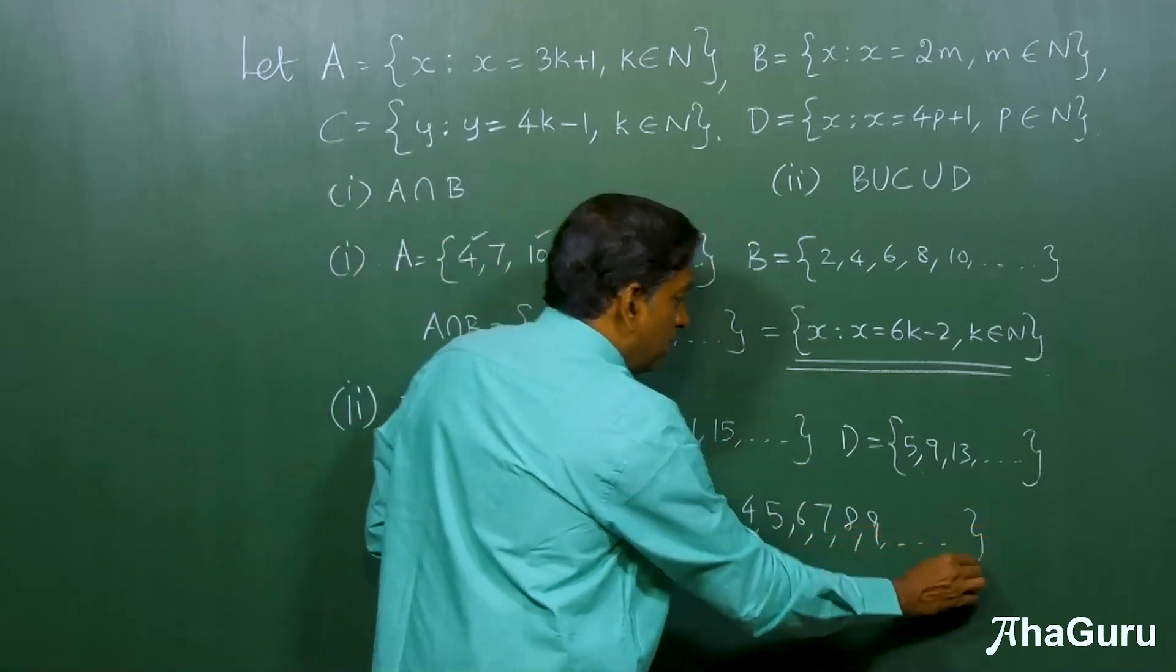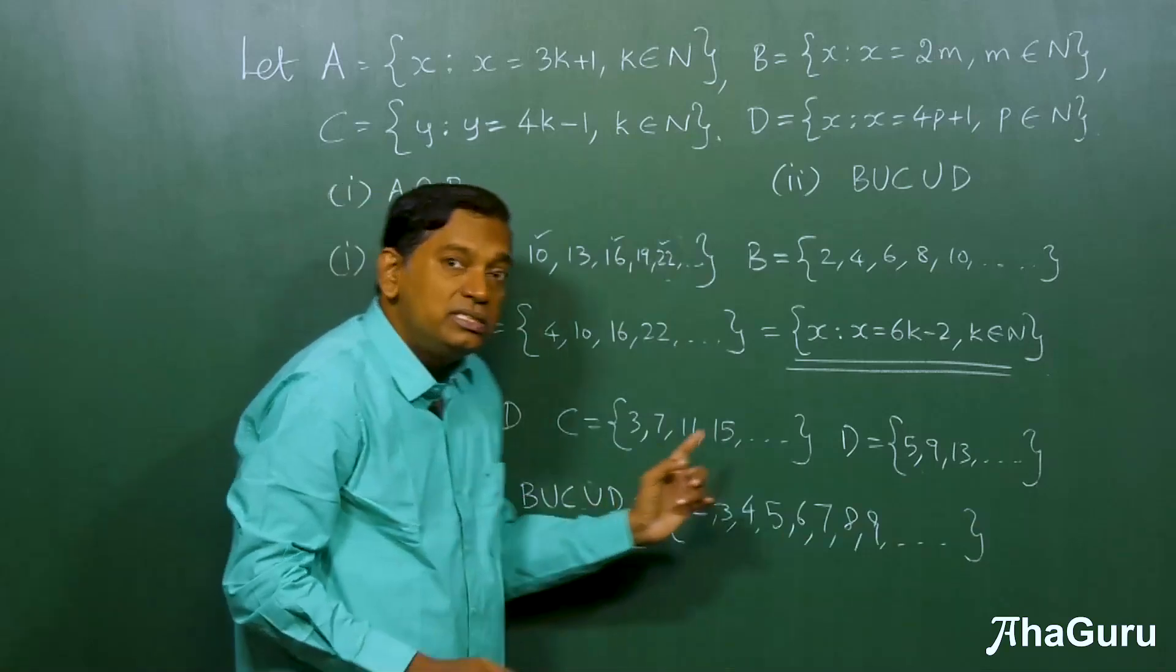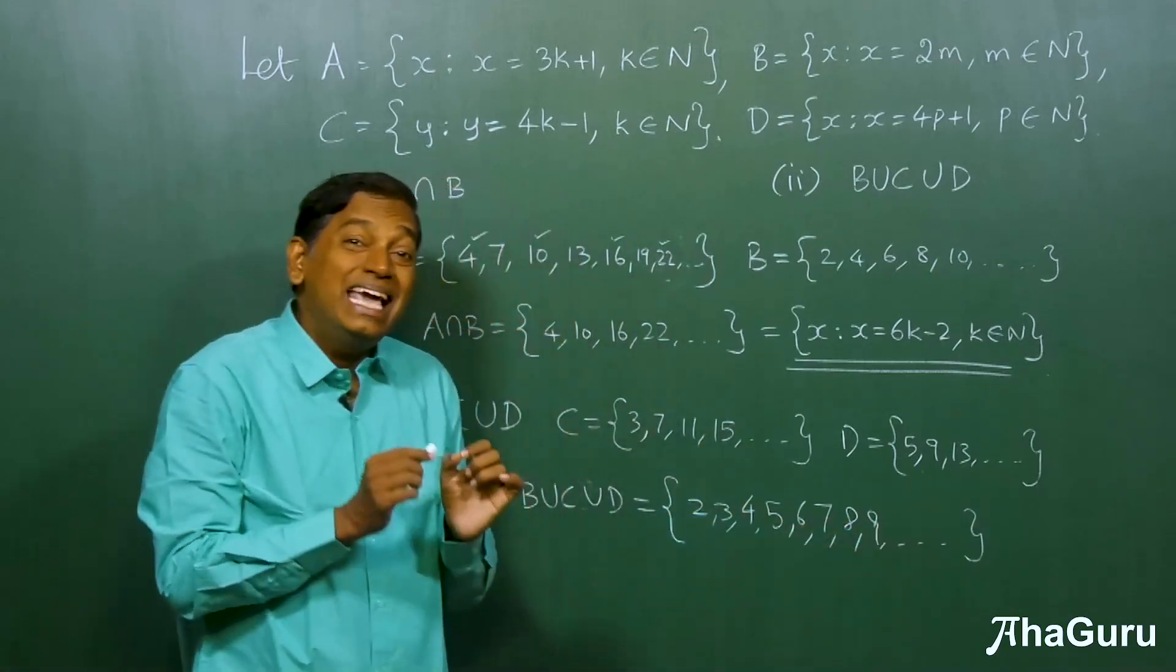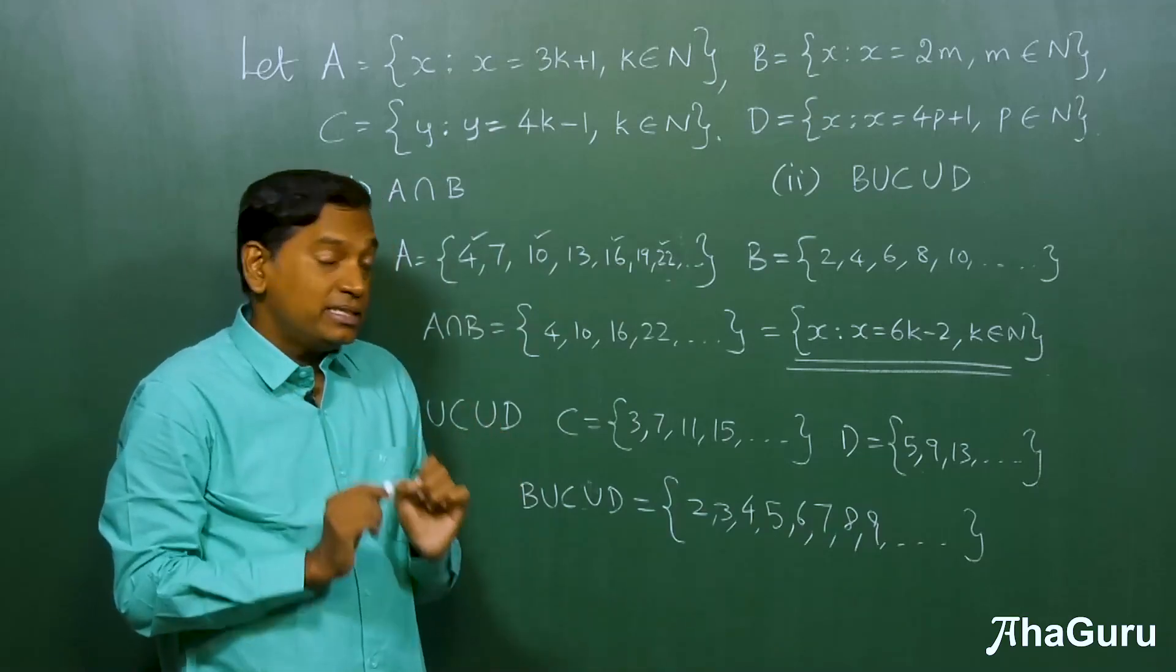So, that means what? B union C union D is nothing but the set of all natural numbers except one.